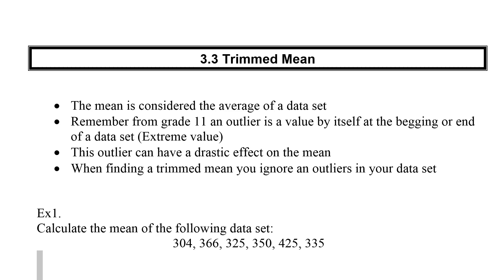If you remember, the mean is considered the average of our data set. Like most averages, we will add all the values together, divide by how many we have. However, there are some values that we consider more extreme than others. If you remember all the way back to grade 11, we have the idea of an outlier. An outlier is a value that's all by itself, the very beginning or the end of a data set. So it's a very small value or a very large value. We call these outliers.